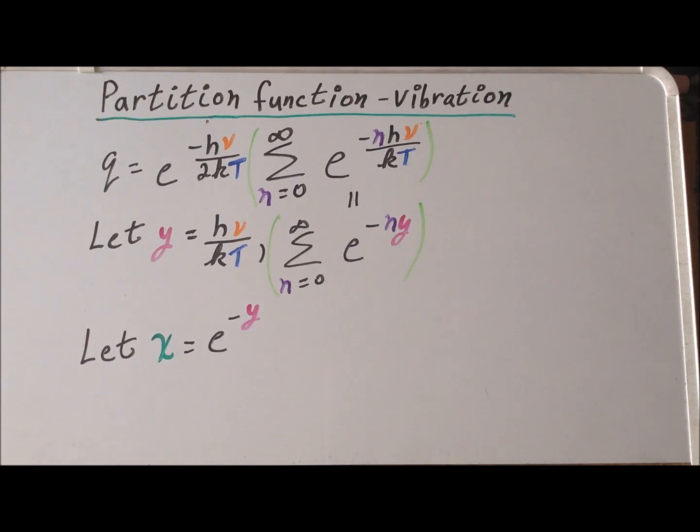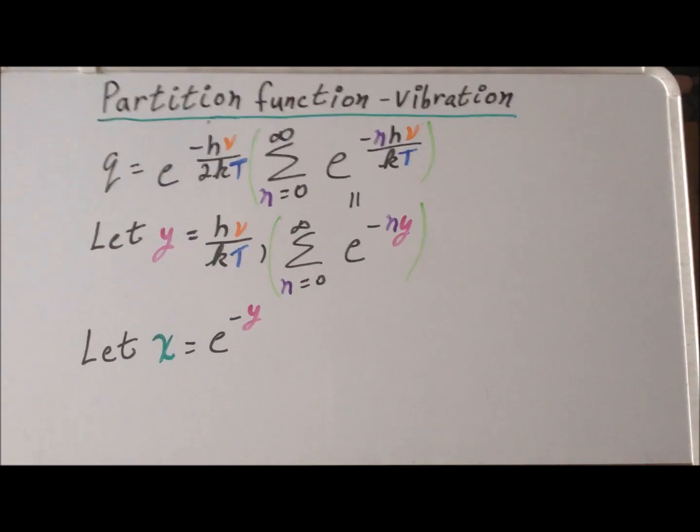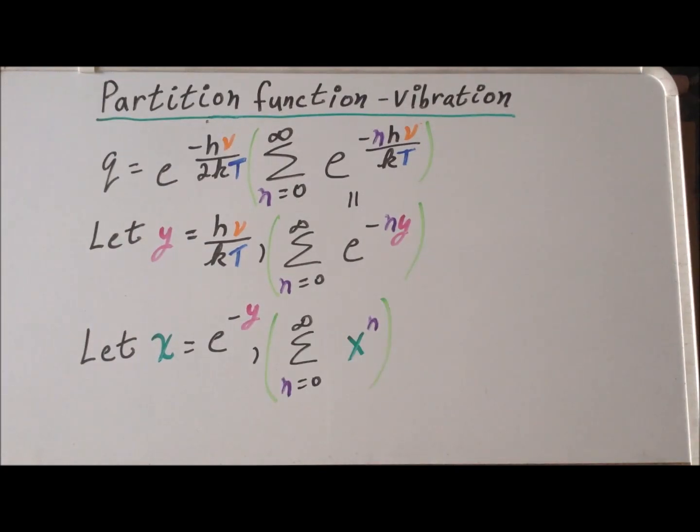We're going to need a second substitution to make things easier and this substitution is to let x equal e to the minus y. Once we make that substitution, it converts this summation all the way down to the sum of x to the n for n equals 0 to infinity.